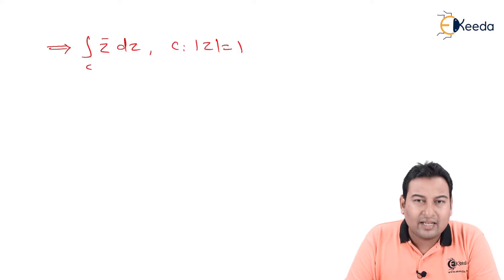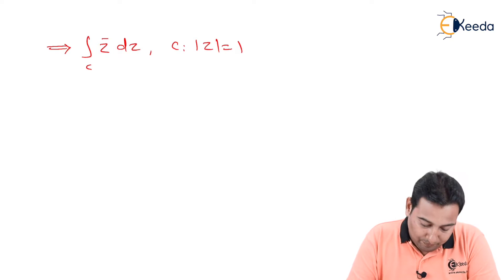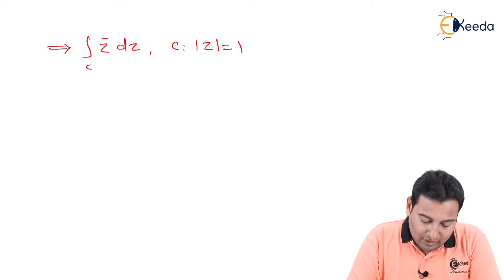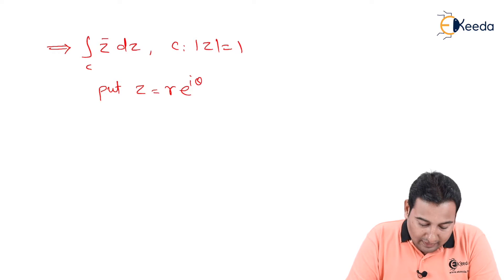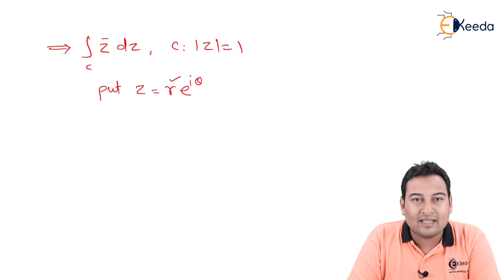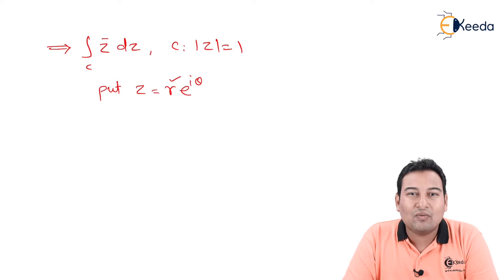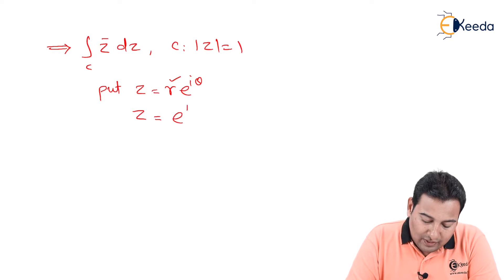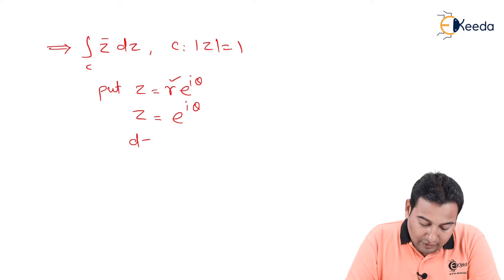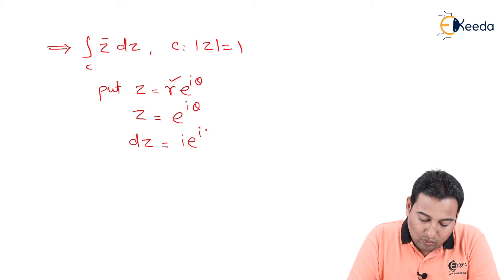The problem clearly mentions a circle, so it is type 1 — closed curve — and the substitution is fixed. We put z equal to r·e^(iθ). Since mod z equals 1 means the circle has radius 1, we replace r with 1. So z equals e^(iθ) and dz equals i·e^(iθ)·dθ.